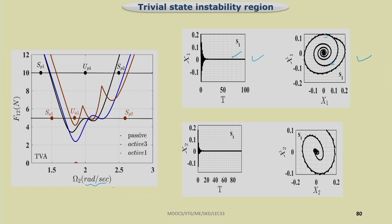If you plot inside the instability region, the response is given as an assignment. You can verify that the response grows with time — in the unstable region the response grows with time.